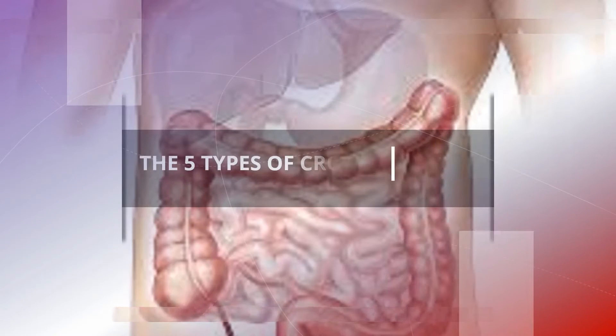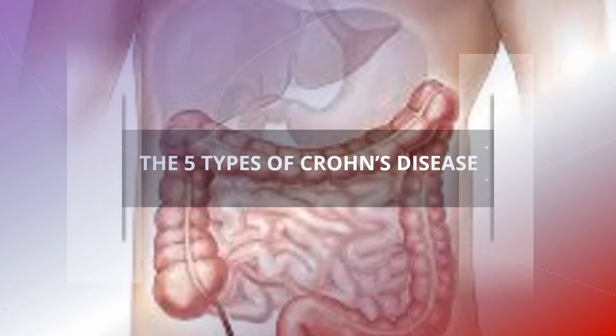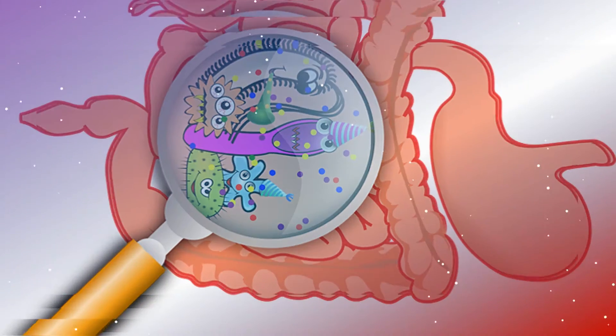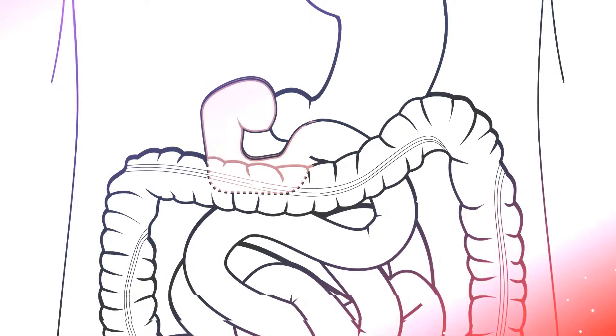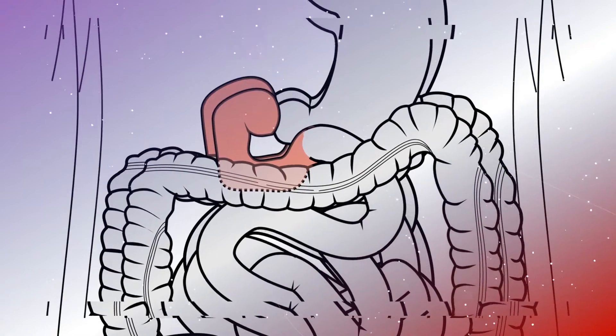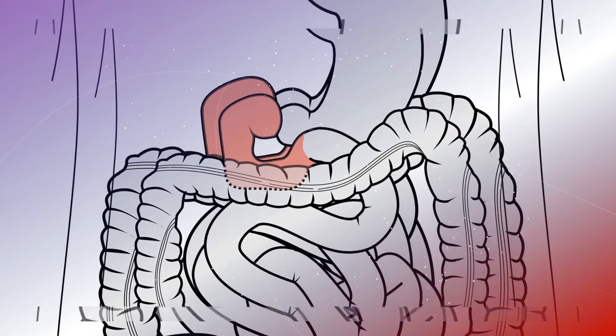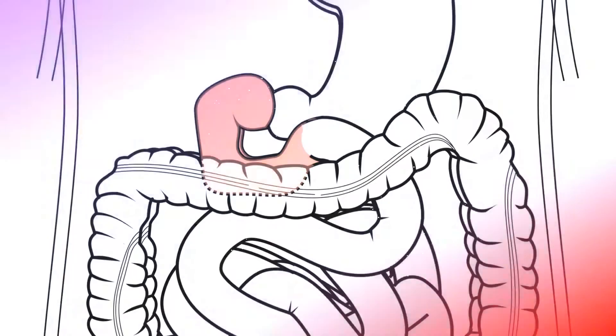The 5 Types of Crohn's Disease. Along with ulcerative colitis, Crohn's disease is part of a group of diseases known as Inflammatory Bowel Disease. There are 5 different types of Crohn's disease, each with its own set of symptoms. Here is information about Crohn's Disease and the 5 types that you can use to help you discuss symptoms and treatment options with your doctor.